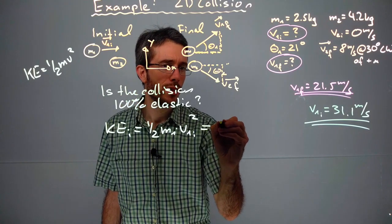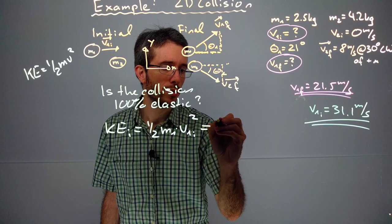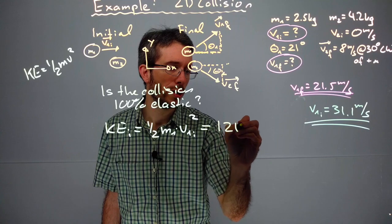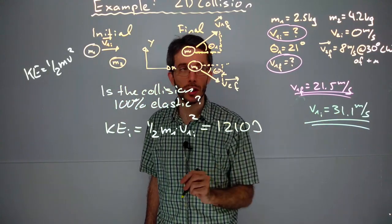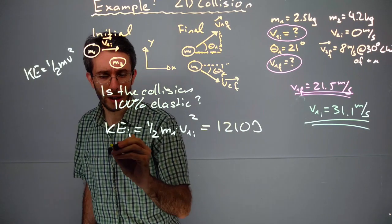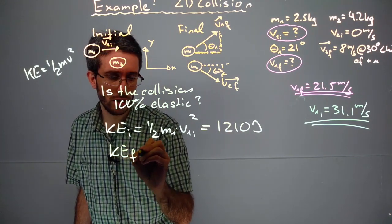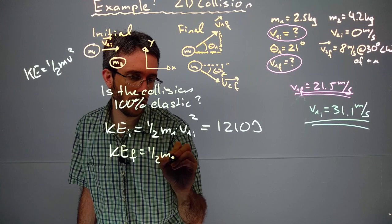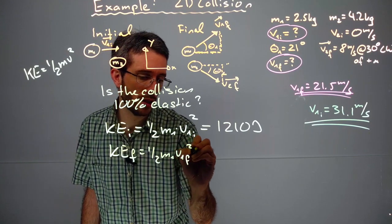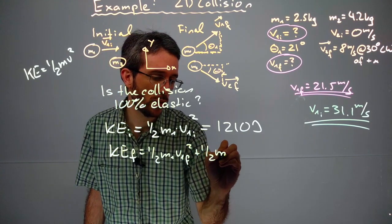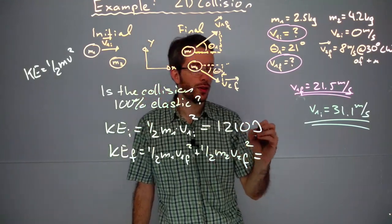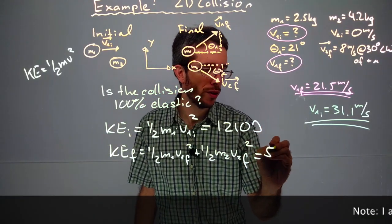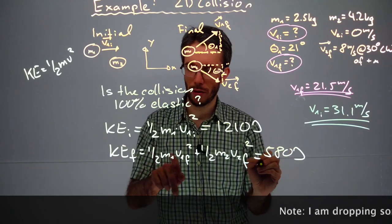My kinetic energy final is 1/2 m1 v1 final squared plus 1/2 m2 v2 final squared, which gives me around 580 joules for this part.